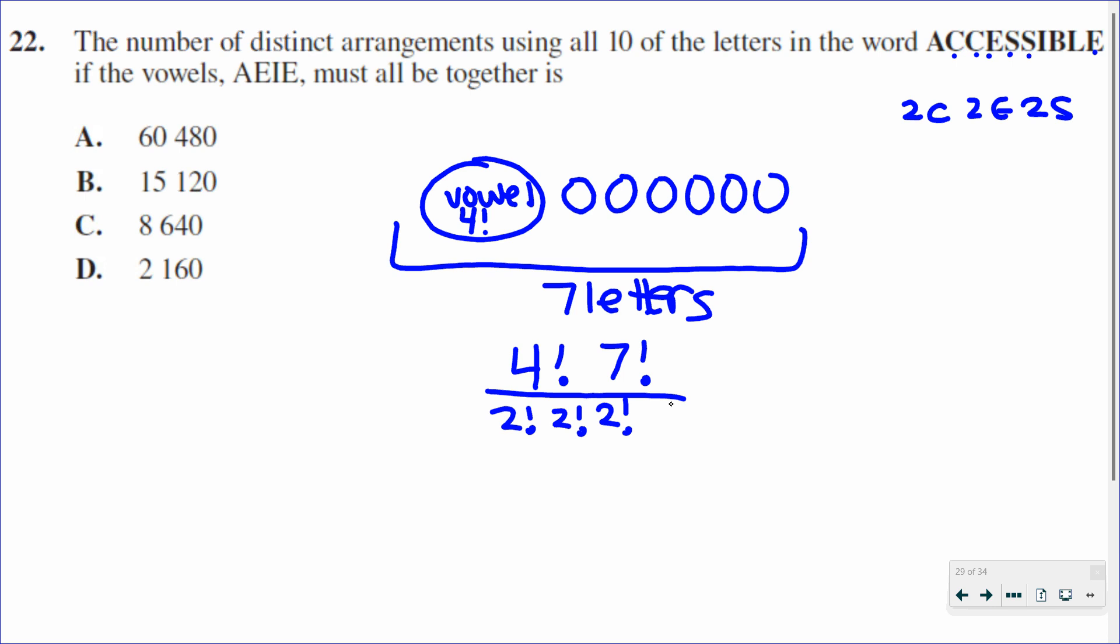So let's put all of that into our calculator. I'm going to do 4 factorial multiplied by 7 factorial in the numerator, and then I'm going to divide that by 2 factorial times 2 factorial times 2 factorial. Punching that into my calculator, I get 15,120. So that would be the answer.